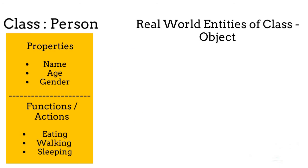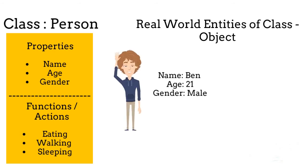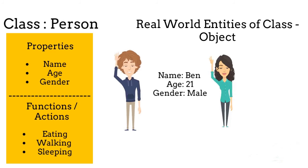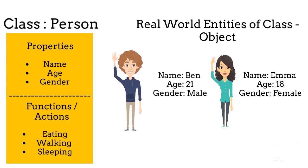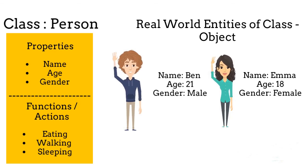Real-world entities of a class are called objects. Let's consider a real-life person named Ben — Ben is a 21-year-old boy. Consider another person named Emma — Emma is an 18-year-old girl. In this way we can create an infinite number of objects of the class 'Person'. Ben and Emma are real-world examples of a class, so they are objects.